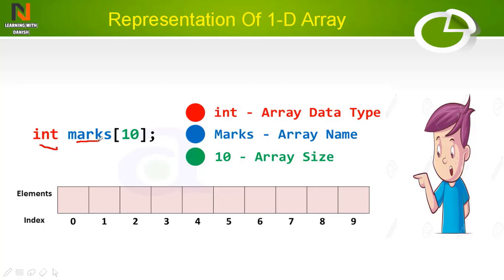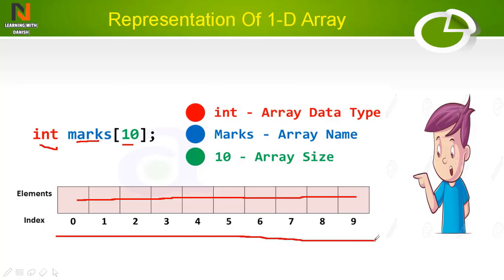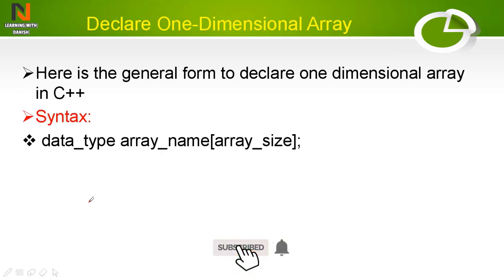In the representation, you can see: int is the data type, marks is the array name, and 10 is the array size. These are the memory locations in which we store data, and these are the indexes. Using these indexes we access values. For example, to access the value at index 0, use index 0 at that position. To access the fifth position, write index 5.